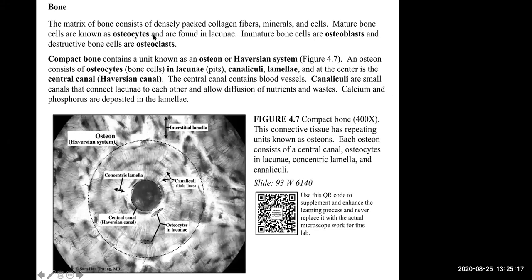Bone cells are called osteocytes and are also found in lacunae. Immature bone cells are osteoblasts and destructive bone cells are osteoclasts. Bone is arranged in circular structures called osteons or Haversian systems — each osteon contains a central canal where blood vessels run through. You'll see osteocytes and rings of bone tissue called lamellae, which can be concentric around the central canal or interstitial between osteons. Looking at a cross-section of bone is like looking at rings of a tree trunk.